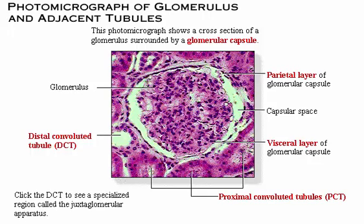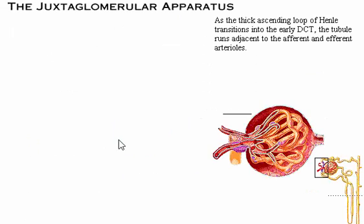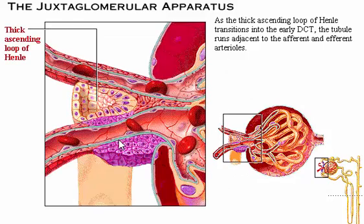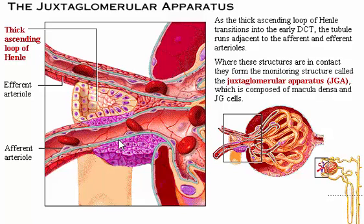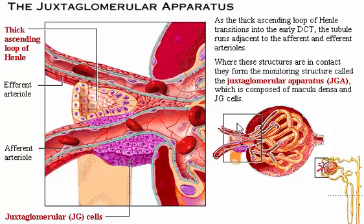As the thick ascending loop of Henle transitions into the early distal convoluted tubule, the tubule runs adjacent to the afferent and efferent arterioles. Where the cells of the arterioles and of the thick ascending loop of Henle are in contact with each other, they form the monitoring structure called the juxtaglomerular apparatus. The modified smooth muscle cells of the arterioles, mainly the afferent arterioles, are called juxtaglomerular or JG cells. These enlarged cells serve as baroreceptors sensitive to blood pressure within the arterioles. Cells of the thick ascending segment in contact with the arterioles form the macula densa, which monitor and respond to changes in the osmolarity of the filtrate.